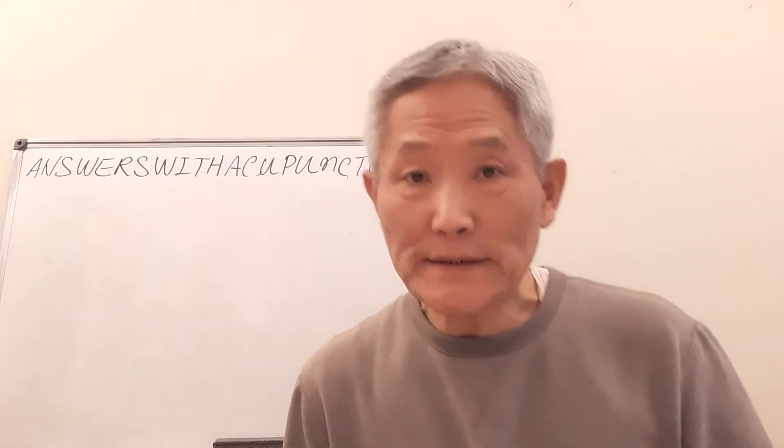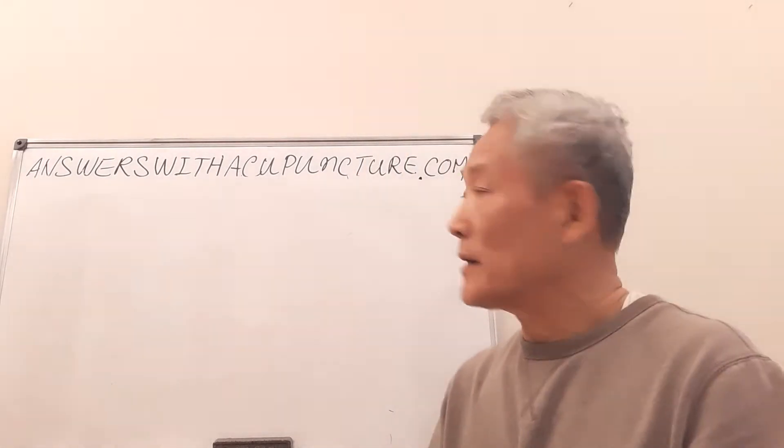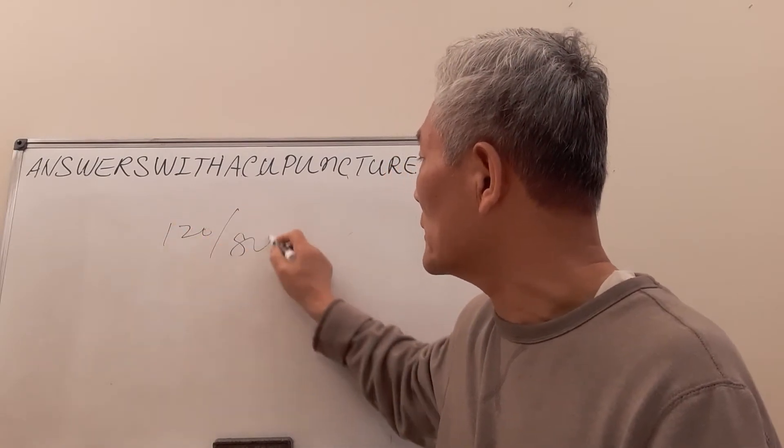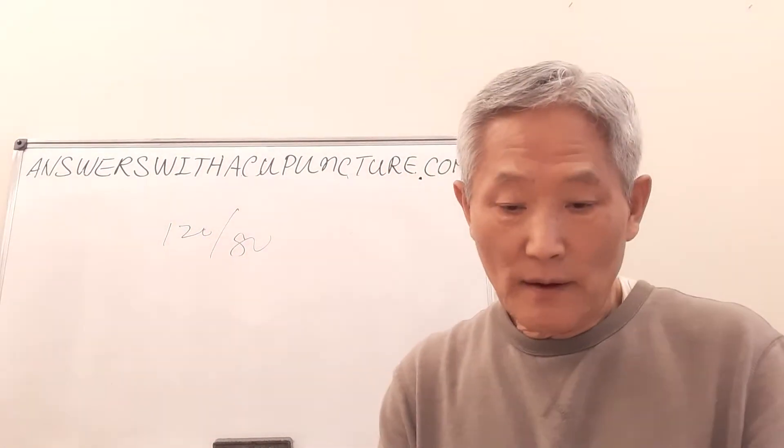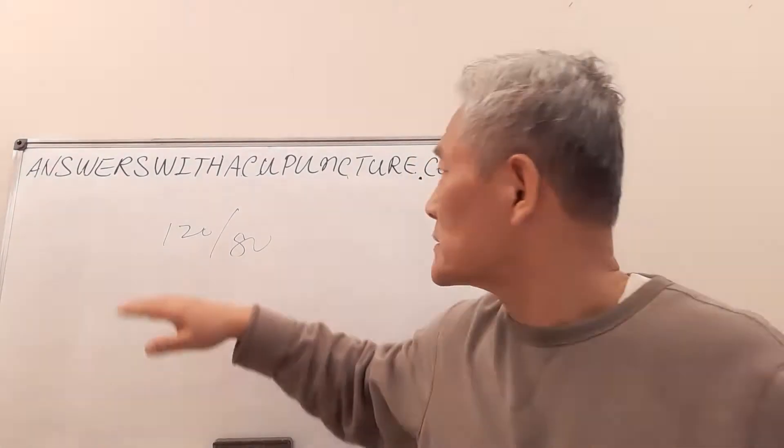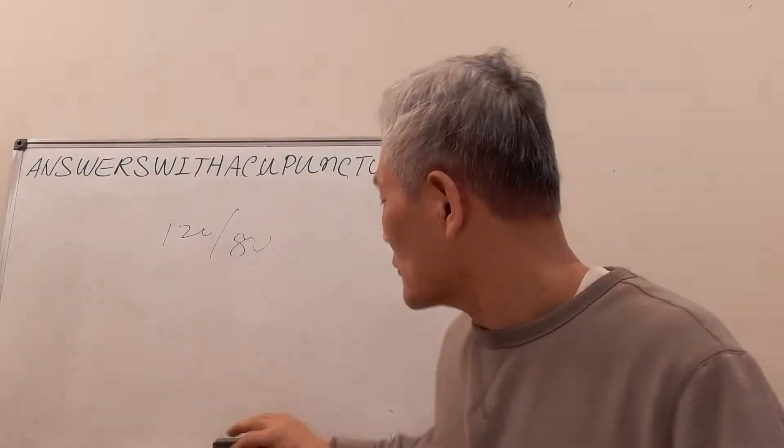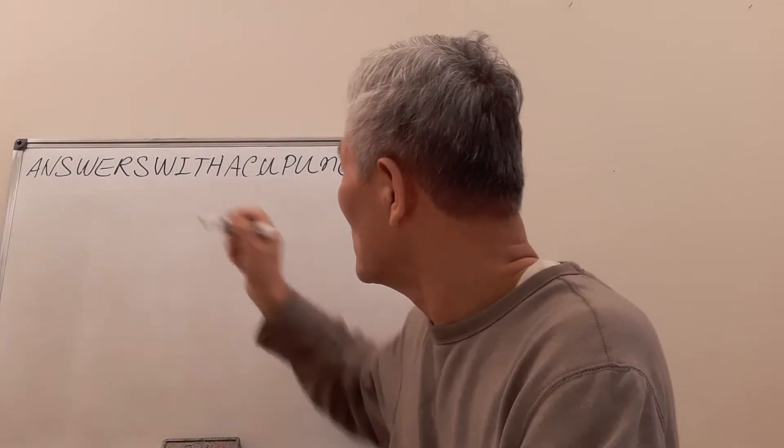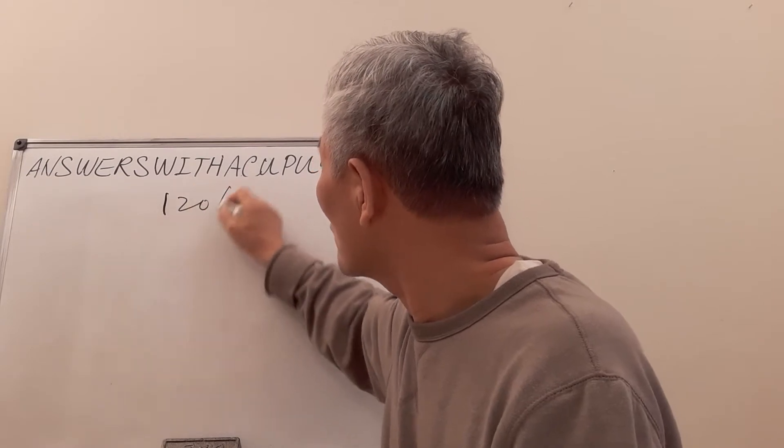Western science says that normal blood pressure is 120 over 80. Now when I look at this, this is 1, 2, 0 - 120 over 80.